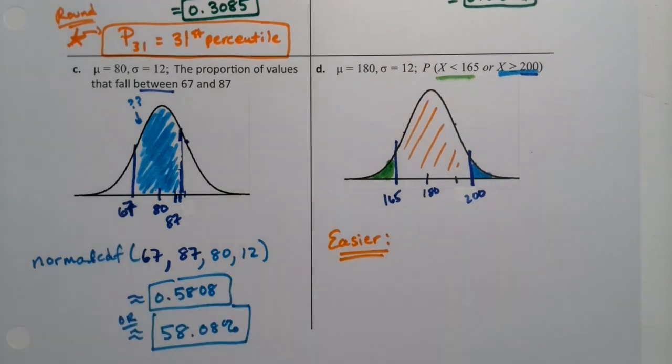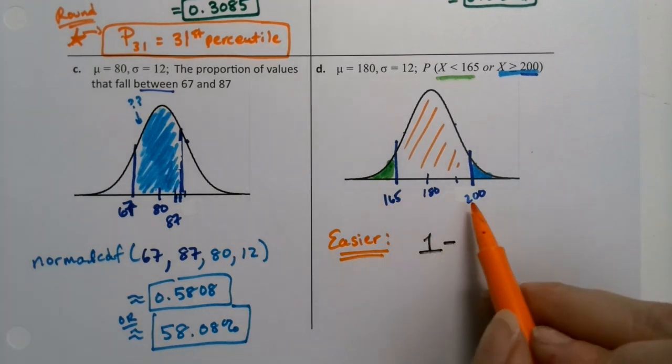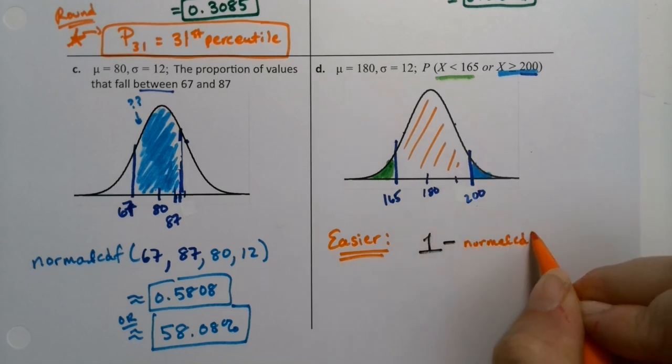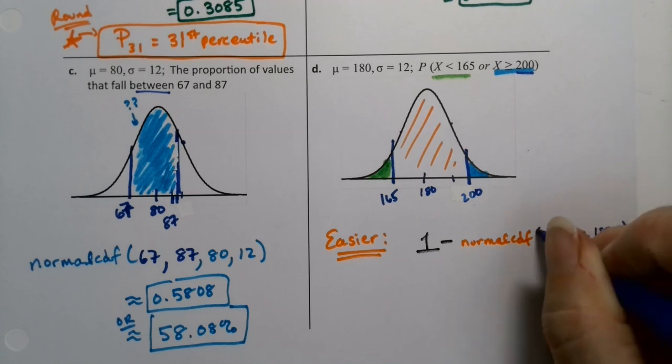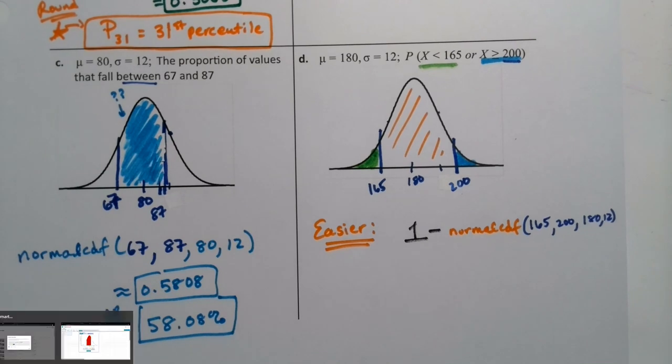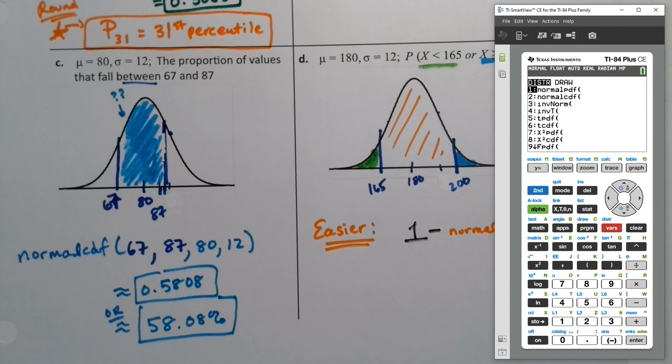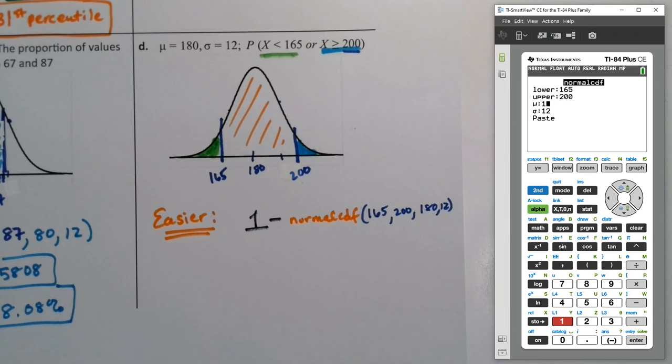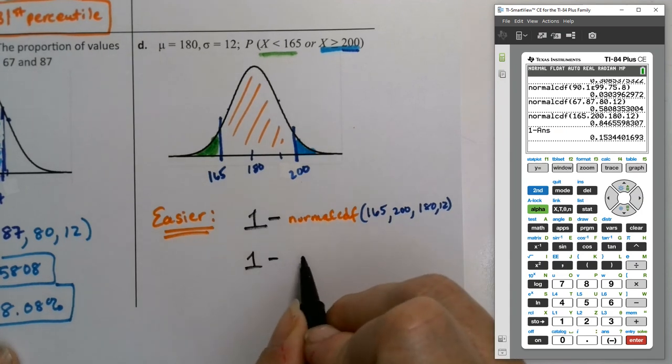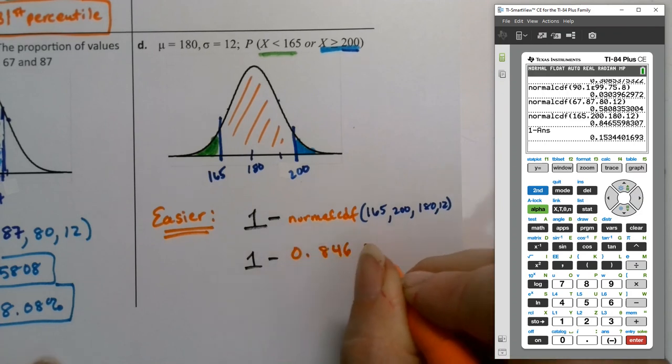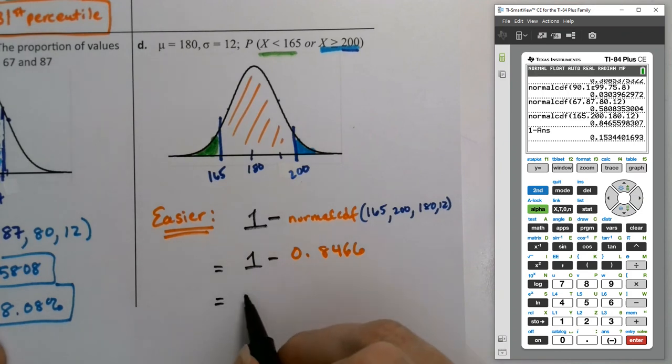But the easier way is to find this zone in the middle. And take it away from one. So take one and subtract away the probability in the center. That would be normal CDF. From 165 to 200, 180, and 12. So let me find that probability. So if I find it second distribution, normal CDF. So 165, 200, I'm going to move it over so you can see. 180 and 12. And I paste that in. That gets me that number. And then I would take one minus that answer. Second little negative sign. So one minus the last answer that I had, which is .1534. So this is one minus that orange zone in the middle is .8466 if we round. Which means that the final result would be .1534.